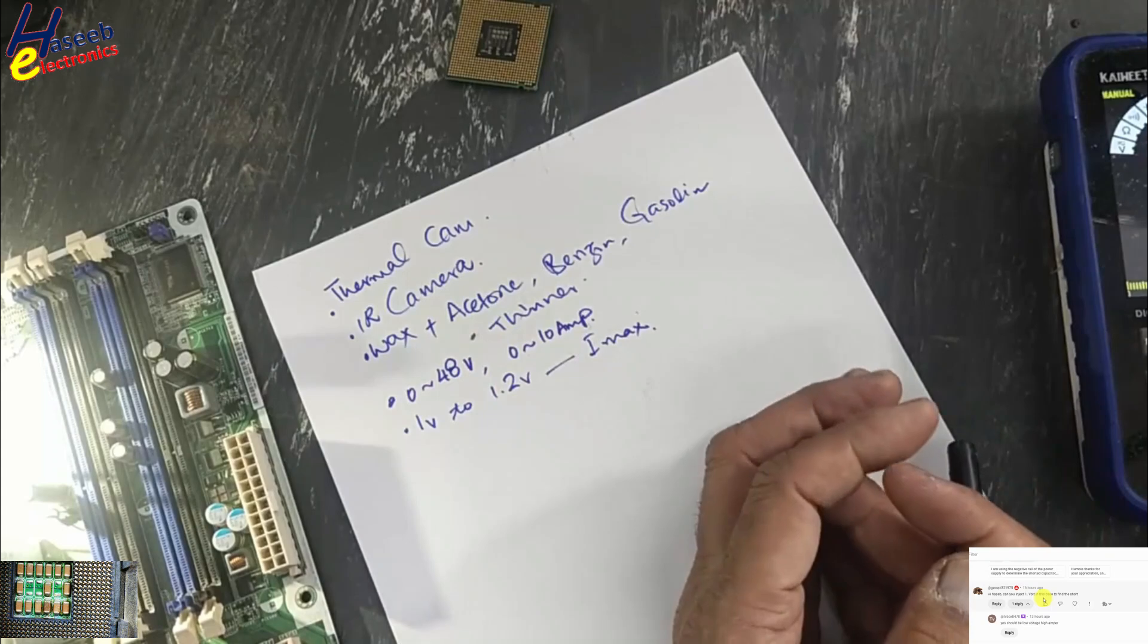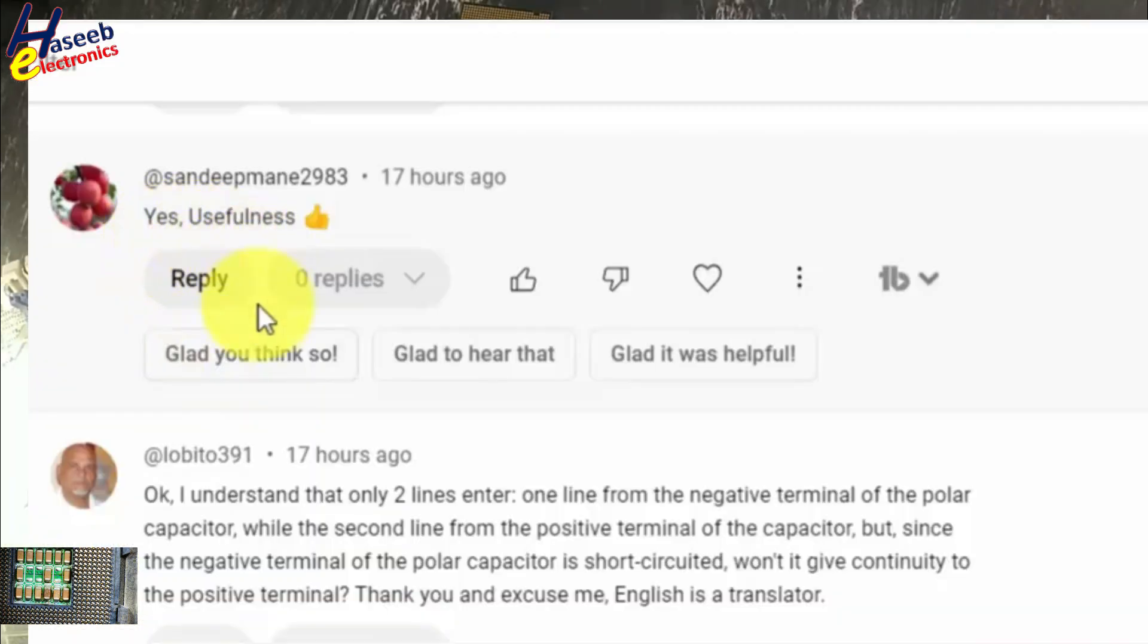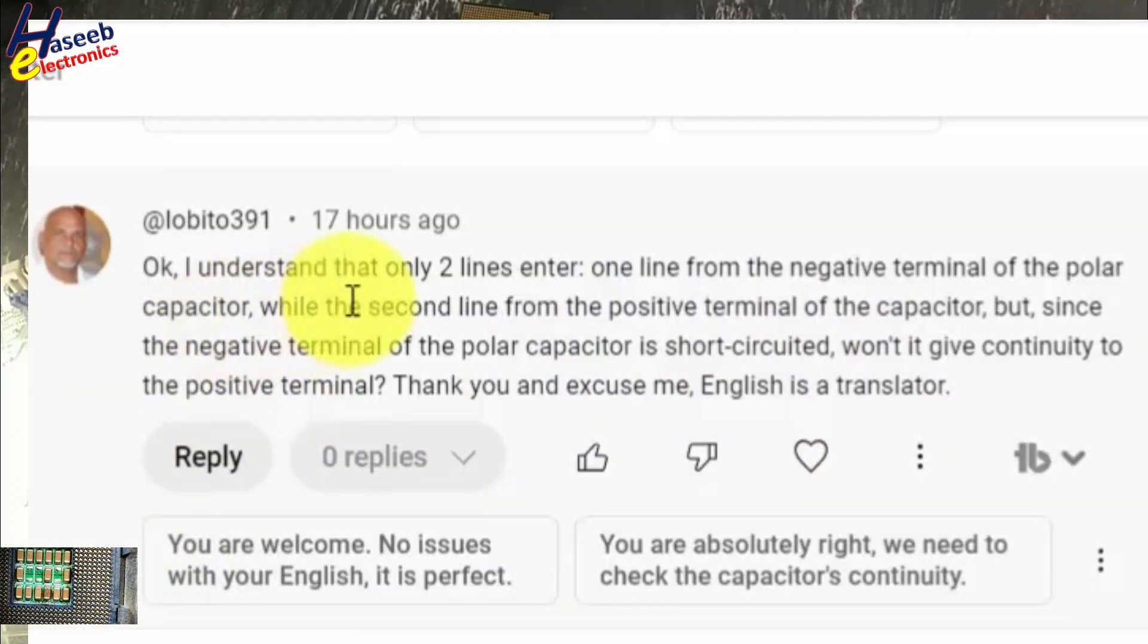Okay, I understand. The only two lines enter - one line from negative terminal of the polar capacitor and the second line from the positive terminal of the capacitor. But since the negative terminal of the polar capacitor is short circuited, would not give continuity to the positive terminal. Thank you. Excuse me, English is by your translator - no problem.